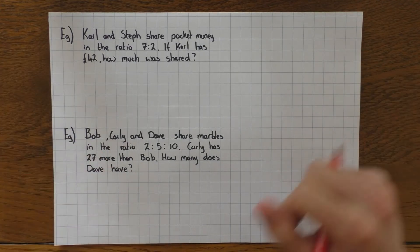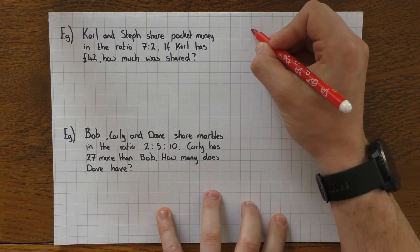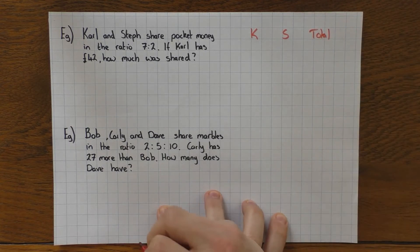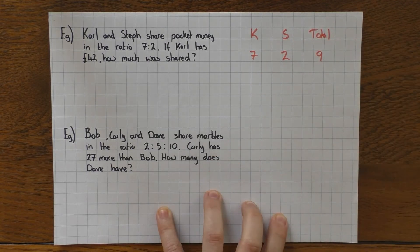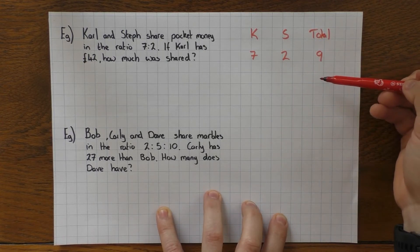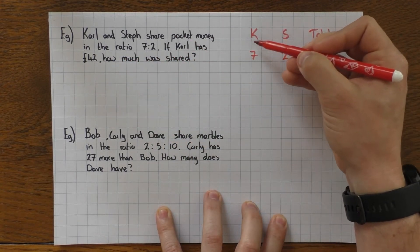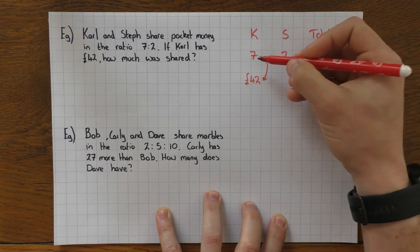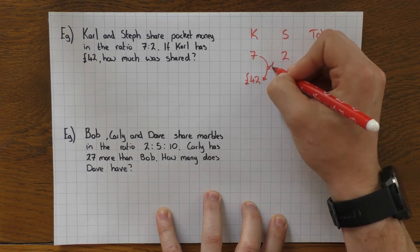So here is my next example. Carl and Steph share pocket money in the ratio of 7 to 2. This is where it's different: if Carl has £42, how much was shared? So no difference in the method—I'm gonna write K for Carl, S for Steph, and then I'm gonna put my total in the table. It's 7 to 2, which gives me a total of 9. Now in this case, I don't put the 42 in the total because it says that Carl has £42, so in the column for Carl I'm going to put £42.